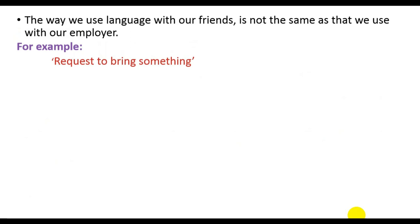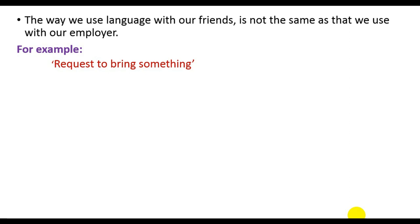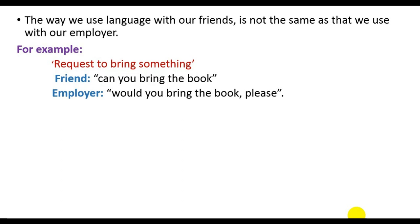Sociolinguistics is a field of inquiry that studies how these social factors affect language use. By way of illustration, the way we use language with our friends is not the same — in terms of style, selection of words, etc. — as what we use with our employers. For example, to request something from a friend you would say 'Can you bring the book?' but with your employer you would say 'Would you bring the book, please?'